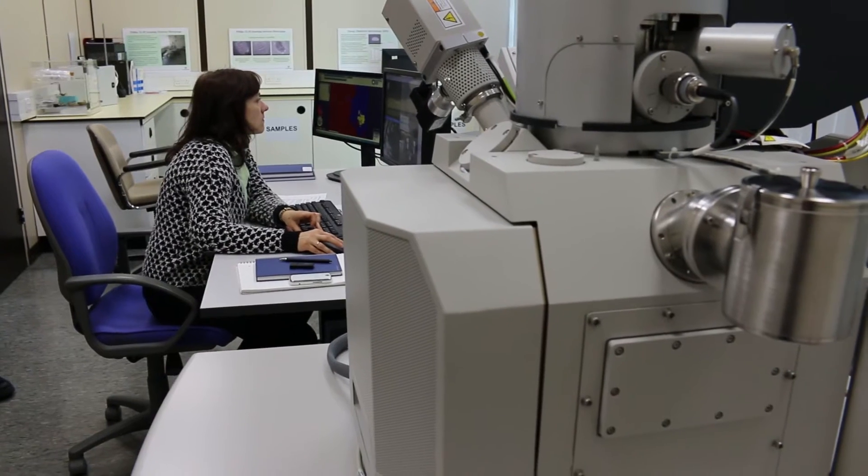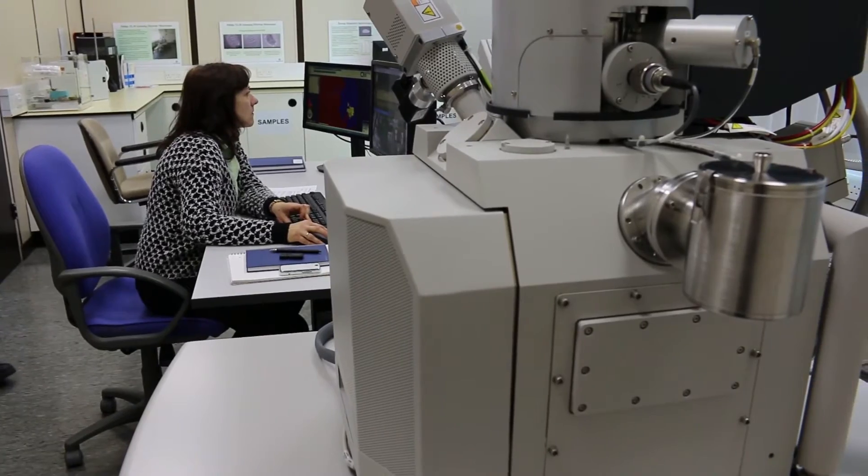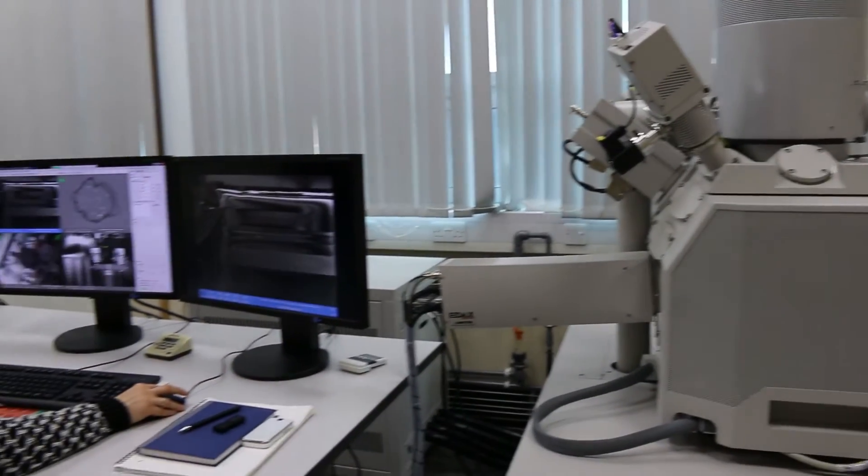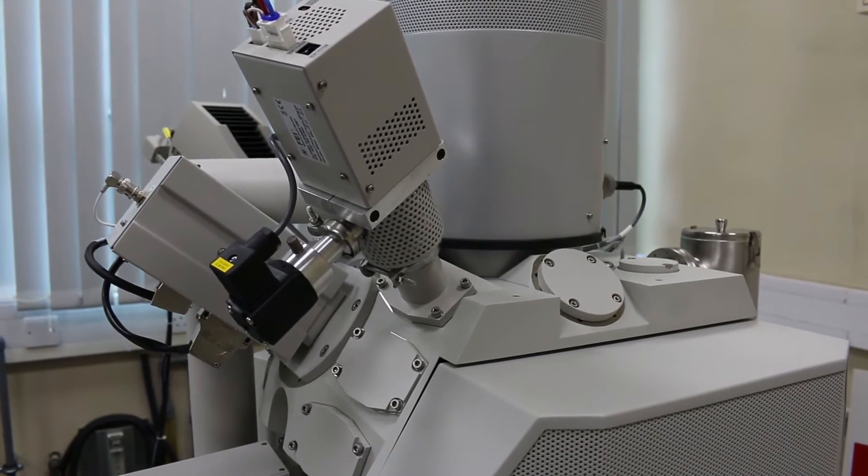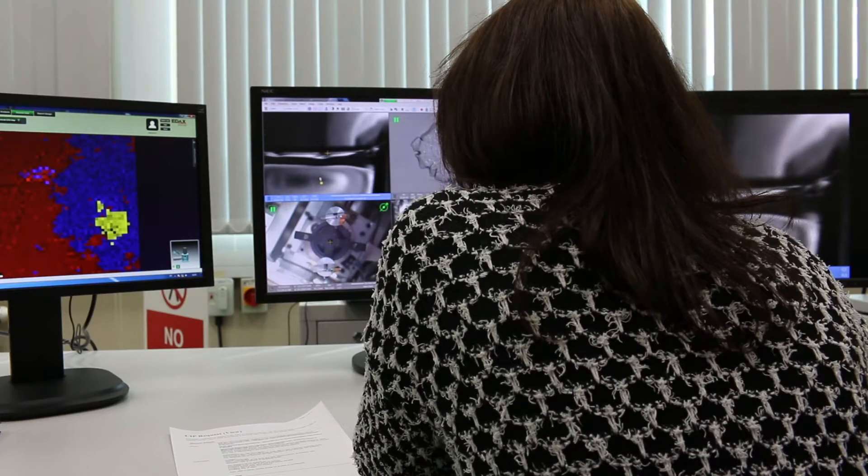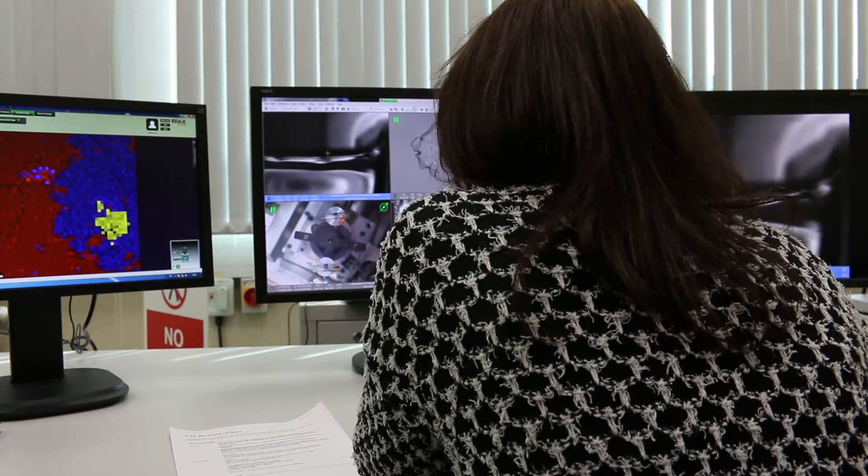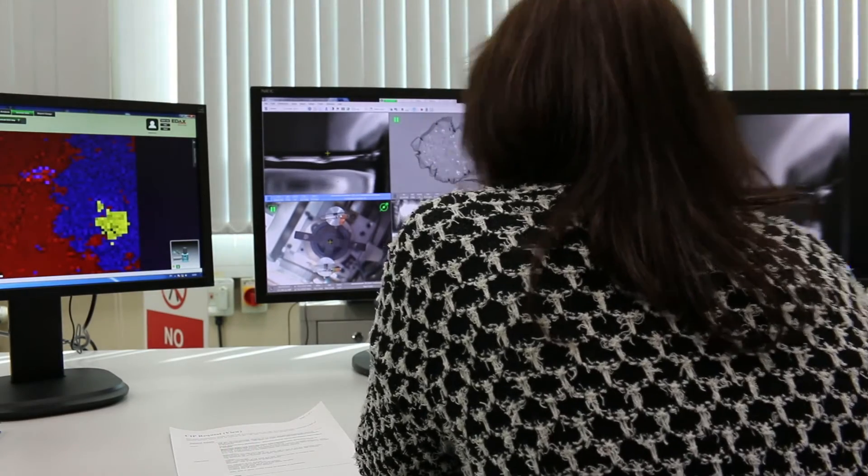Another technique that we frequently use is looking at glass with an electron microscope, which enables us to get a very close view of the surface of the glass. We use that both in our R&D activities to develop new products, and also to help customers with issues that they've had with processing glass.